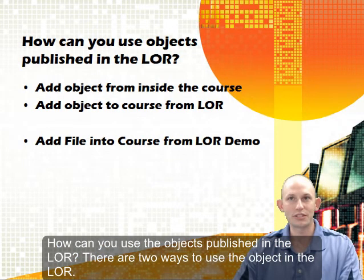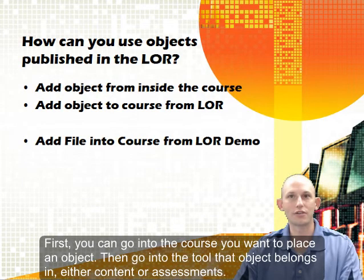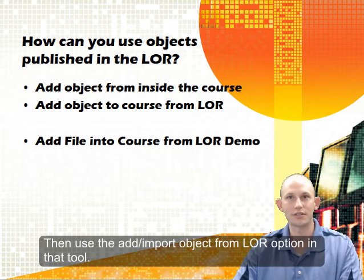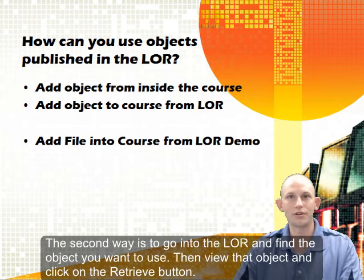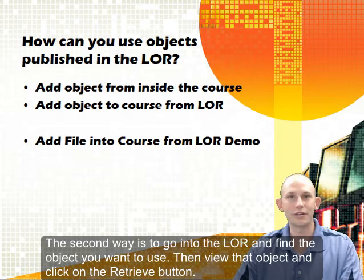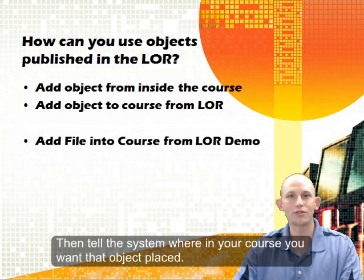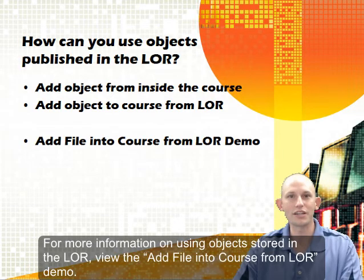How can you use the objects published in the LOR? There are two ways. First, you can go into the course where you want to place an object, then go into the tool that object belongs in — either content or assessments — and use the add or import object from LOR option. The second way is to go into the LOR, find the object you want to use, view the object, click the retrieve button, and tell the system where in your course you want that object placed. For more information, view the add file into course from LOR demo.